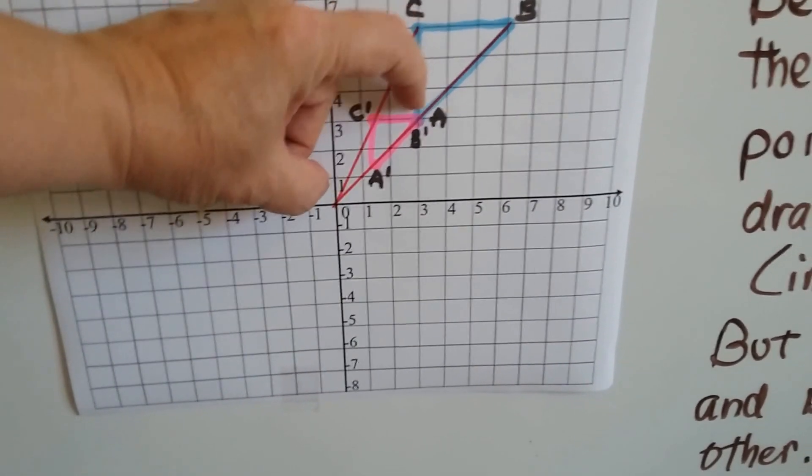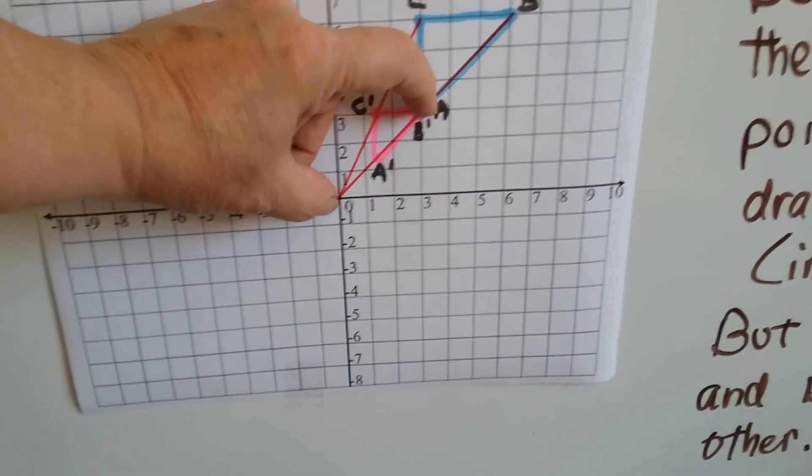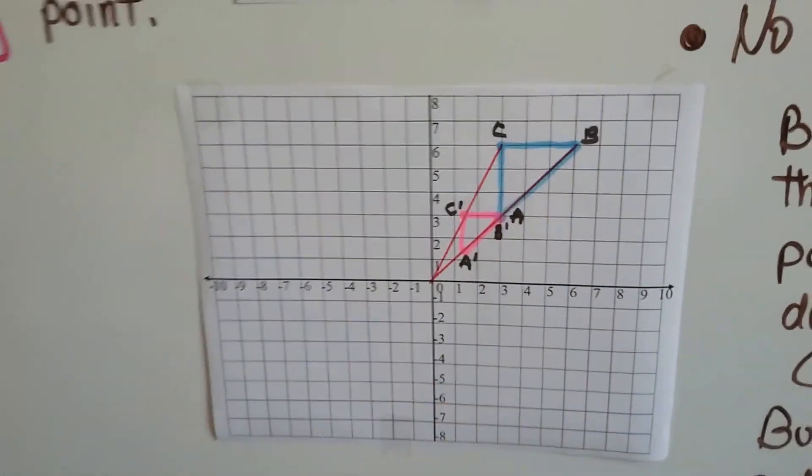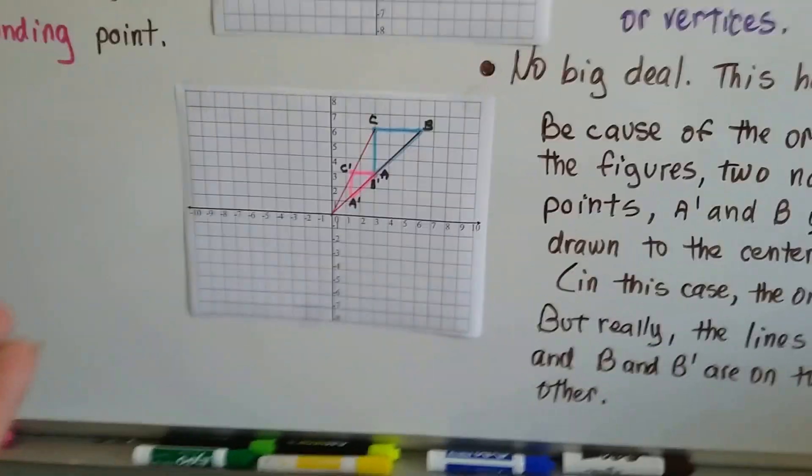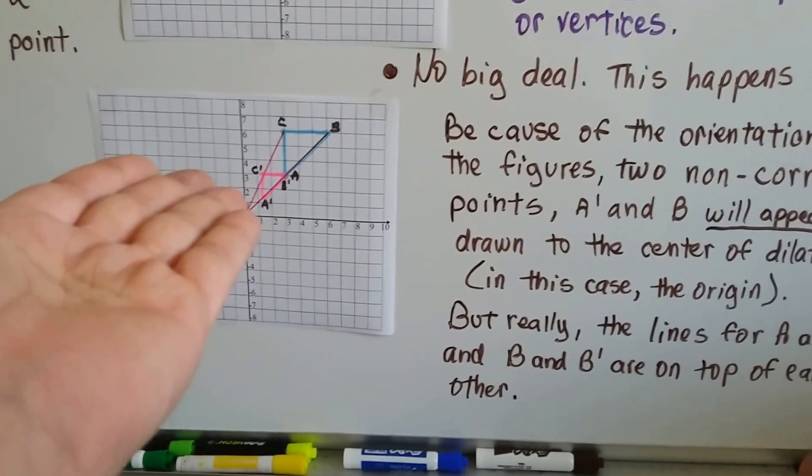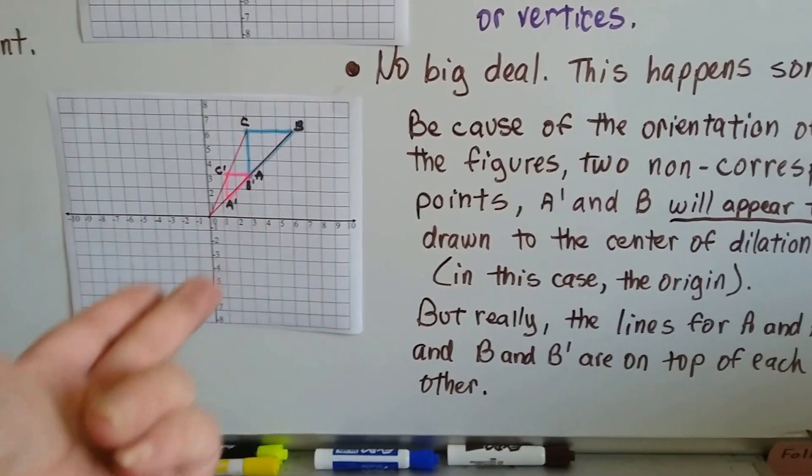When we drew the line to go to the center of dilation between B and B', it just went on top of the line for A and A'. It doubled from this point to this point right here. So really there are three lines, it's just that some are on top of each other so it looks like there's only two.